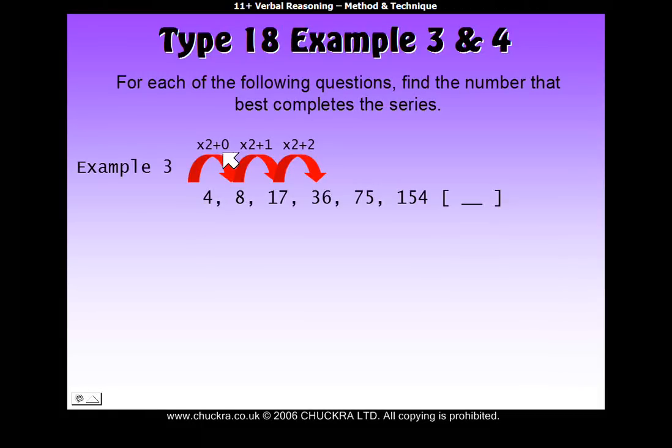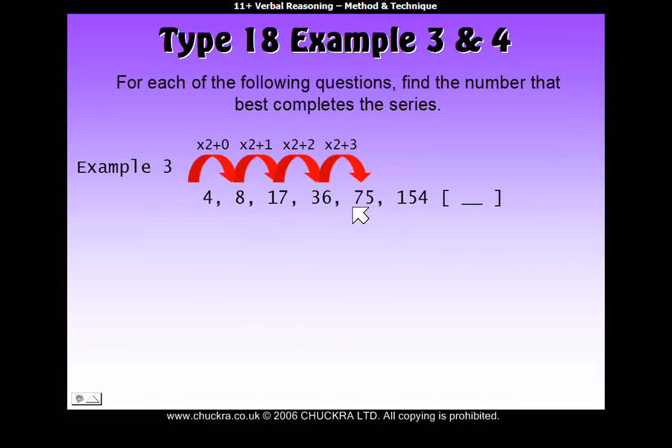So you can see a pattern emerging here. We're doubling each time, and then the bit we're adding on is also going up each step. So adding on 0 in the beginning, then 1, then 2, and so on. So let's see if this pattern continues. So the next one, to get from 36 to 75. If we double 36, we get 72, and we add 3 to get to 75. So yeah, this looks like it's working.